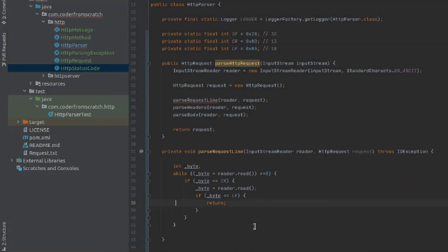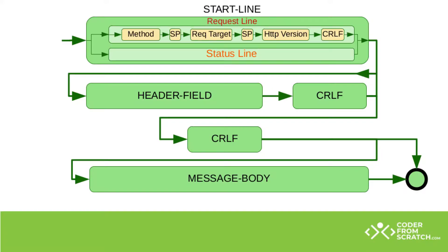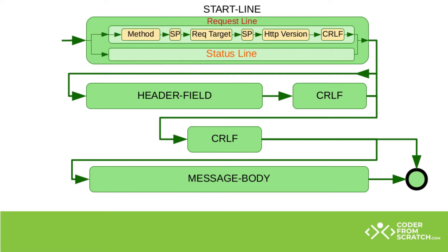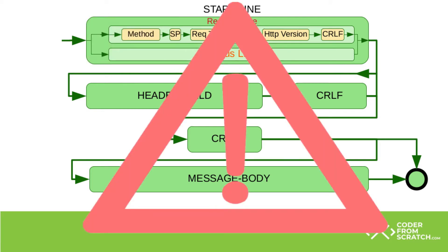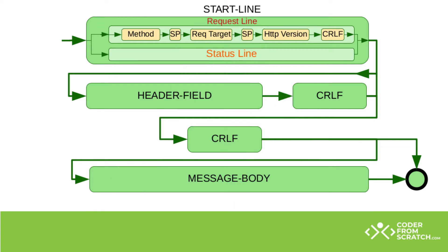We left the last section at the point where we can now detect the carriage return and line feed. To continue parsing the request line, the next thing we need to do is detect spaces. These two delimiters allow us to get the method, the request target, and the HTTP version. As we receive bytes, we look for SP characters and immediately parse the preceding data, which lets us detect errors much sooner than the traditional approach.